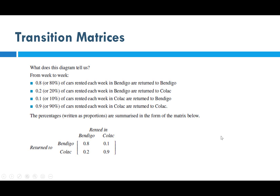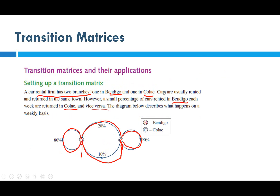So from week to week: 0.8, or 80%, of cars rented each week in Bendigo are returned to Bendigo as shown in the diagram. 20%, or 0.2, of cars rented in Bendigo are returned to Colac. We're just reading what happened and putting it into dot points.